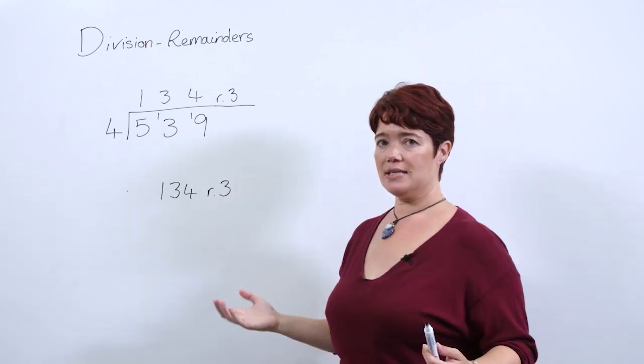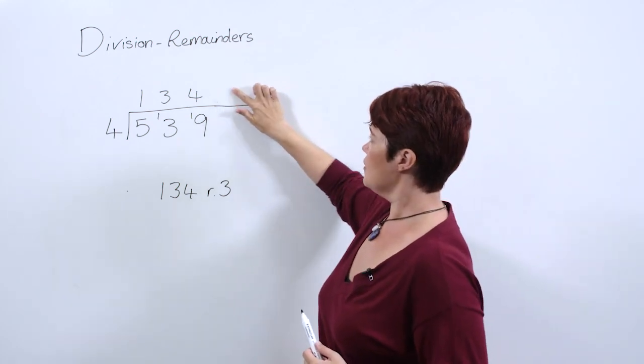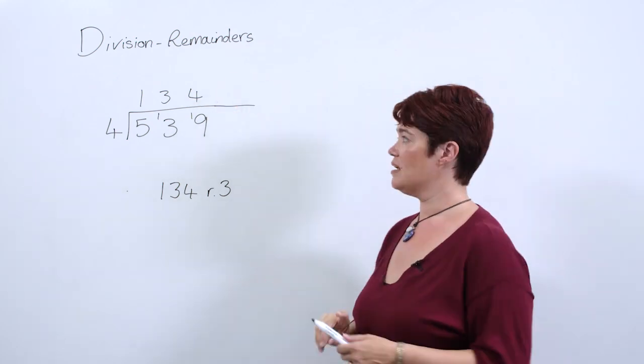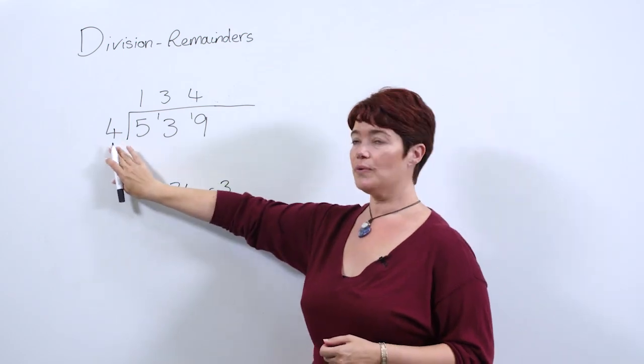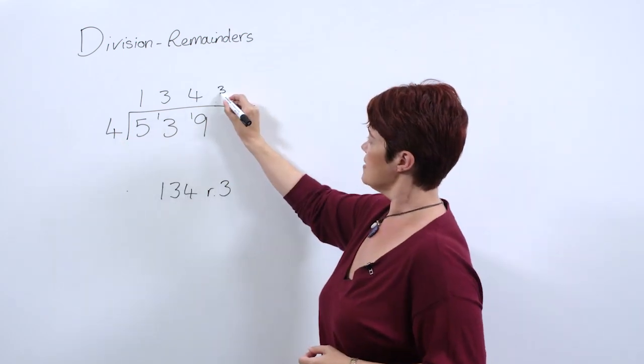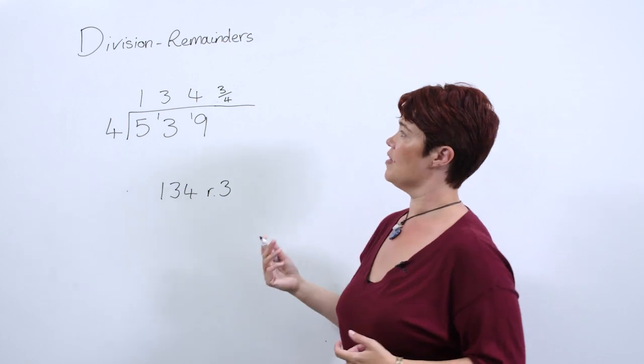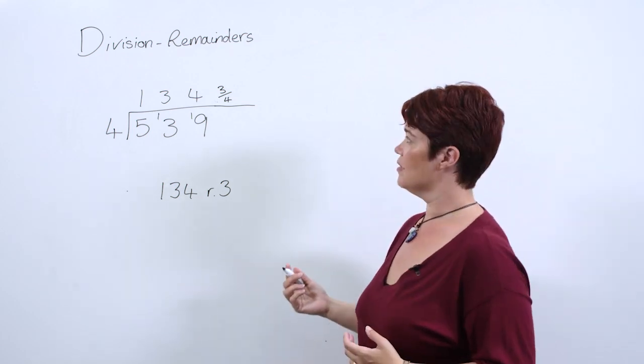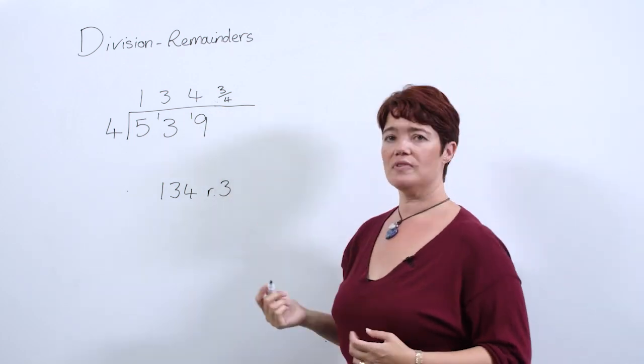Our next way we're going to write it as a fraction. We've still got a remainder of 3 that hasn't changed, but it's 3 out of 4. So again, writing that 3 out of 4 gives us our fraction 3 quarters. So 134 and 3 quarters is our answer.